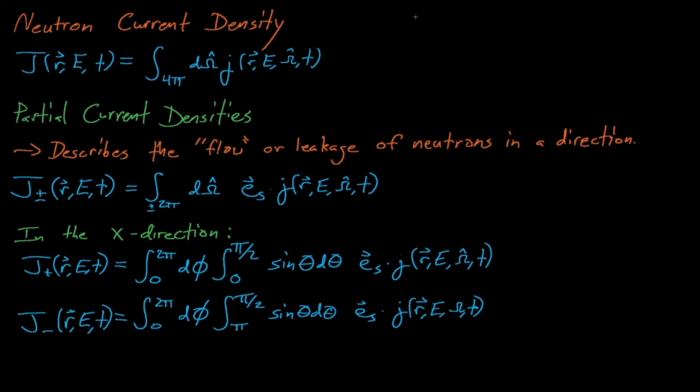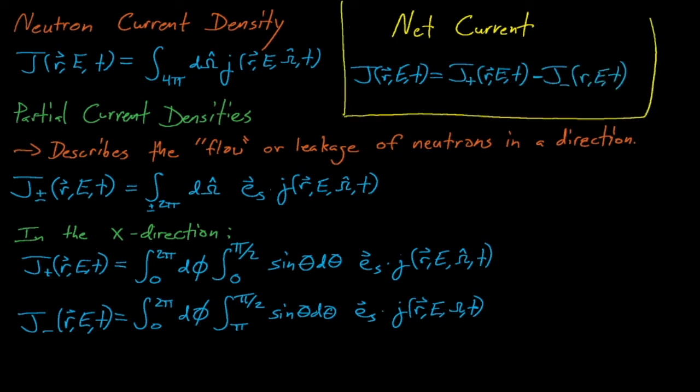With this definition, the net current is equal to j+ minus j-, which implies that the net current equals 0 for an isotropic flux. In other words, if neutrons are traveling in all directions with an equal probability, this makes sense. If neutrons are traveling equally in all directions, then there is no overall net flow or net current of neutrons. On average, neutrons are not traveling preferentially in any one direction.